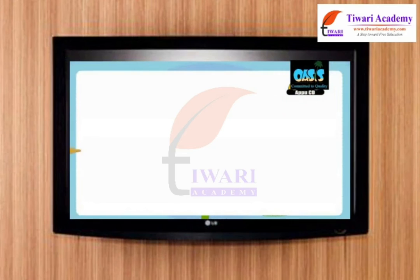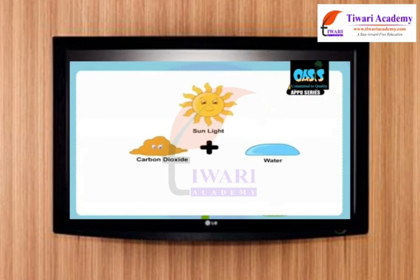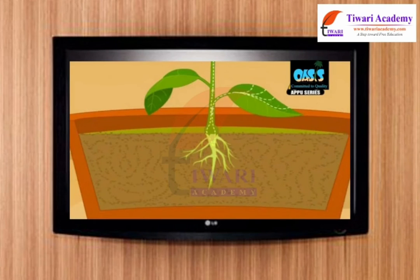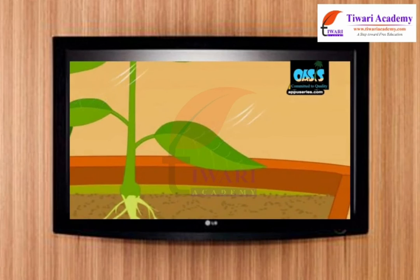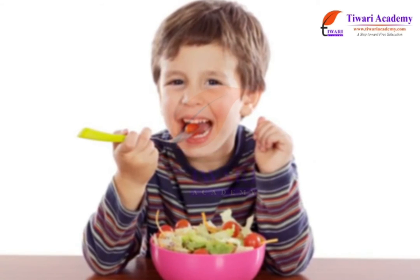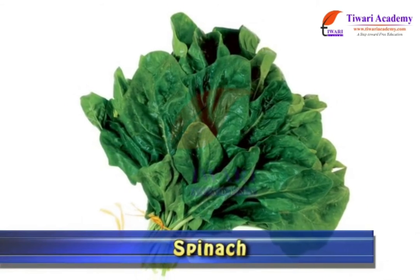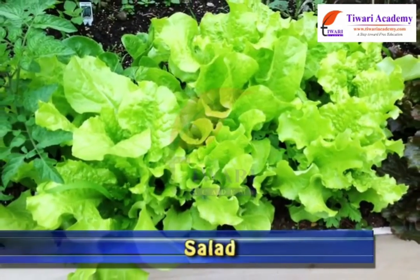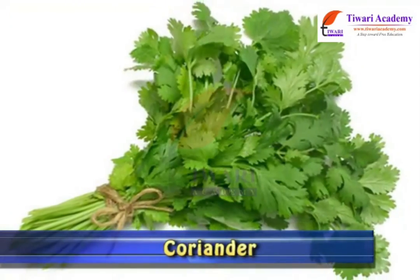The green part of the leaf makes food in the presence of sunlight, water, and carbon dioxide, by the process known as photosynthesis. Another function of the leaf is to give out excess water from the plant in the form of vapour, by the process of transpiration. Leaves of some plants are eaten as vegetables. Examples are spinach, fenugreek, salad, coriander, etc.